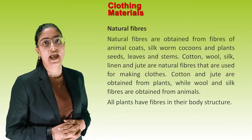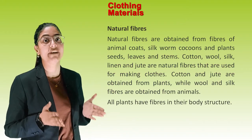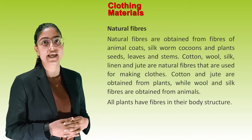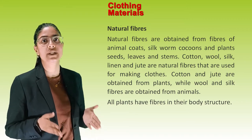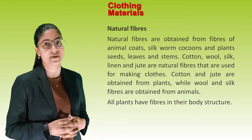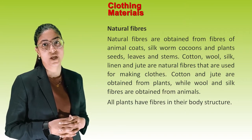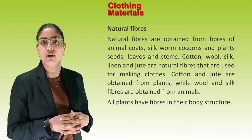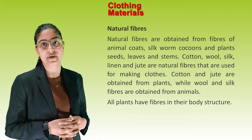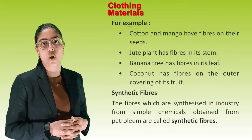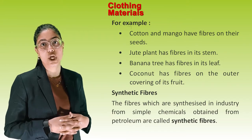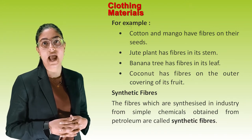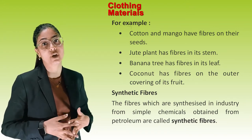Natural Fibres: Natural fibres are obtained from animal coats, silkworm cocoons, and plant seeds, leaves and stems. Cotton, wool, silk, linen and jute are natural fibres used for making clothes. Cotton and jute are obtained from plants, while wool and silk fibres are obtained from animals. All plants have fibres in their body structure — cotton and mango have fibre on their seeds, jute plants have fibre in their stem, banana trees have fibre in their leaves, and coconut has fibre on the outer covering of its fruit.